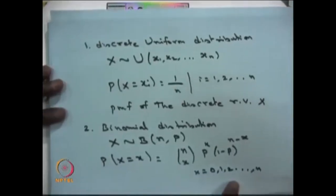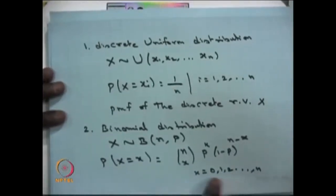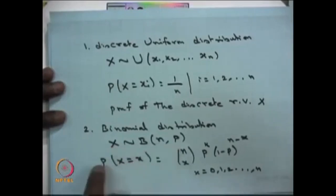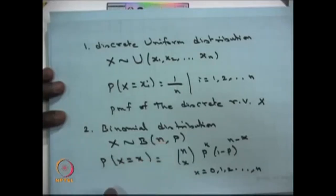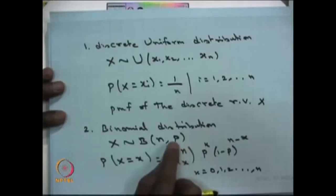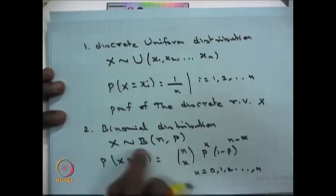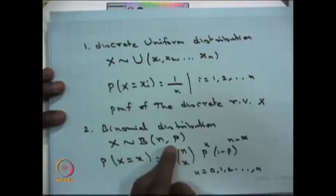This is called a binomial distribution. If you put n equal to 1, then that is going to be the Bernoulli distribution. Here p is the probability of success in each trial, and you can create the binomial trials by having n independent Bernoulli trials where each trial has probability of success p.